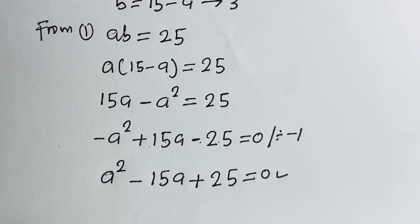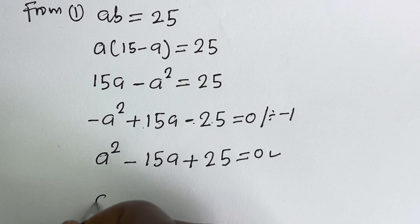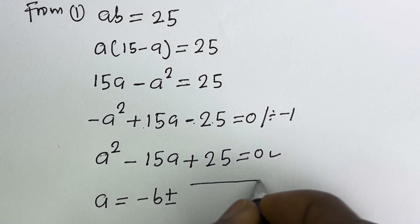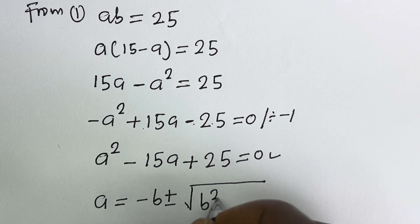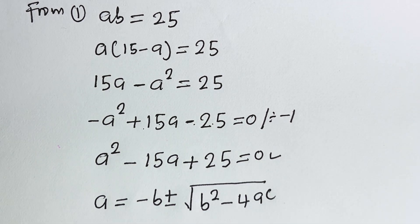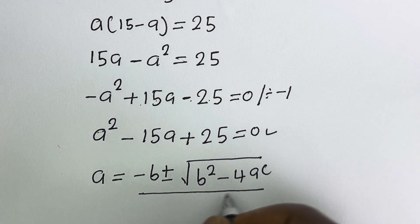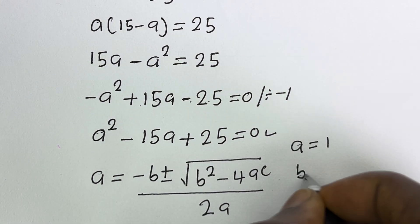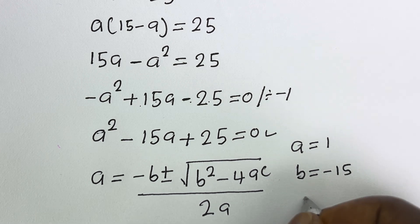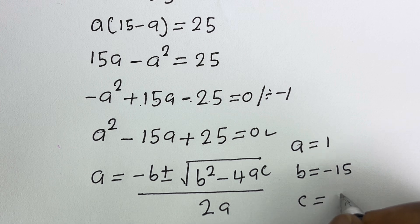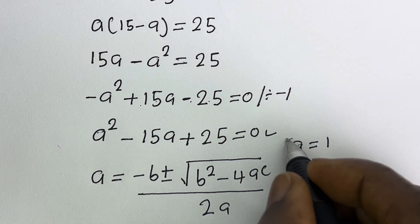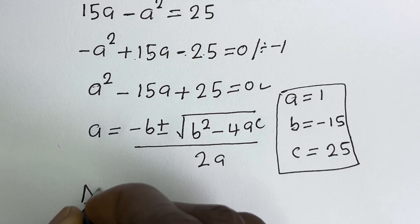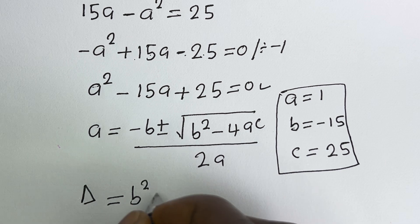This is a quadratic equation. Using the quadratic formula: a equals minus b plus or minus square root of b squared minus 4ac, over 2a. From this equation, a equals 1, b equals minus 15, and c equals 25.